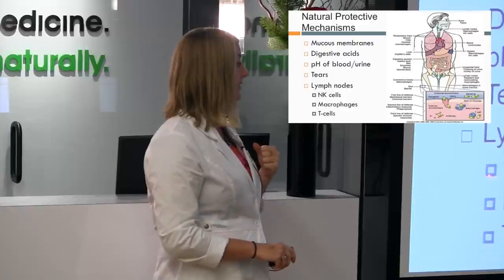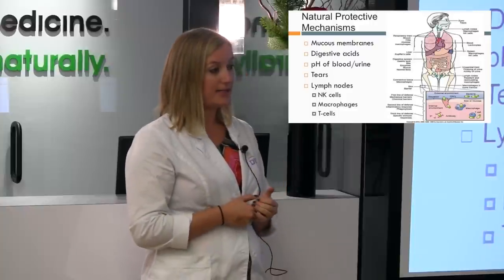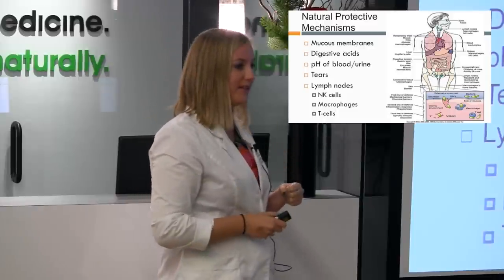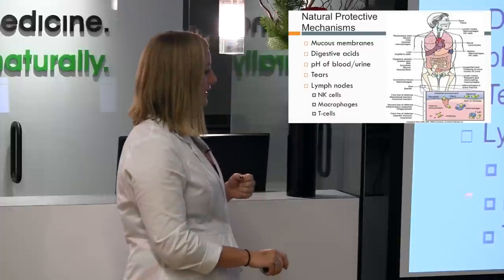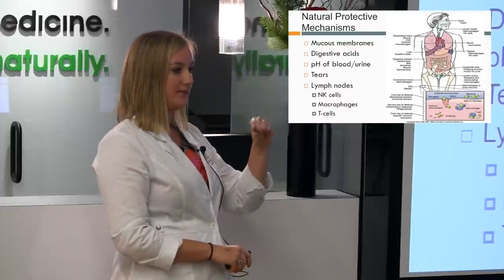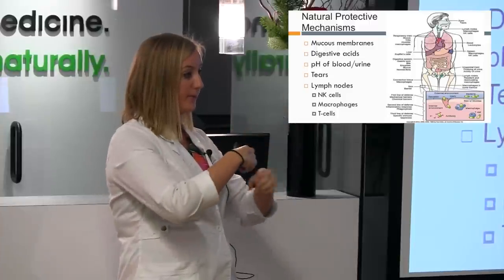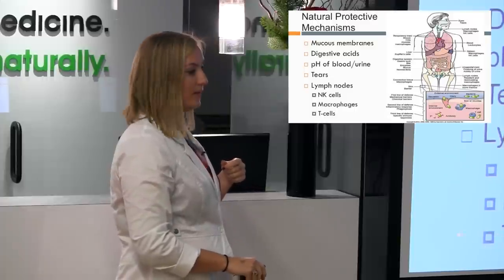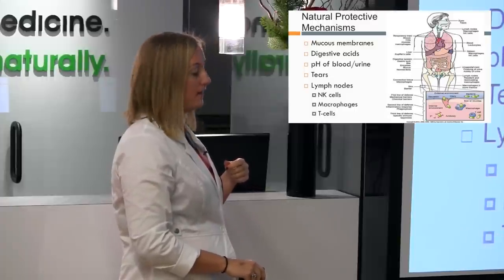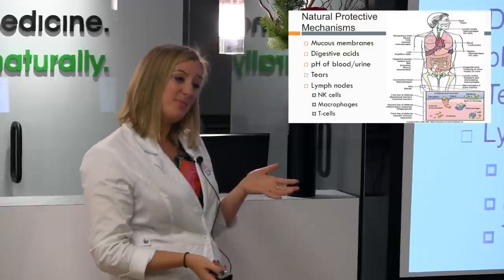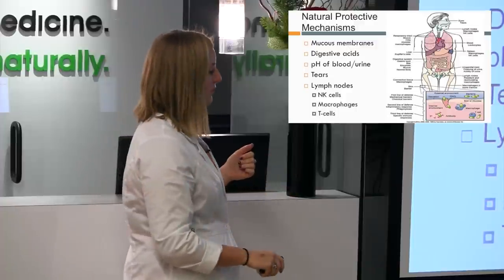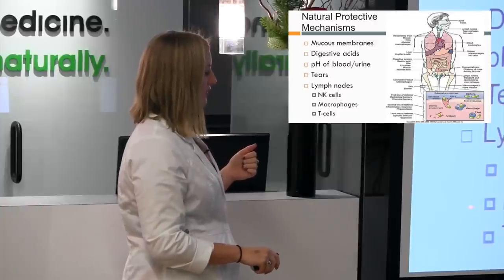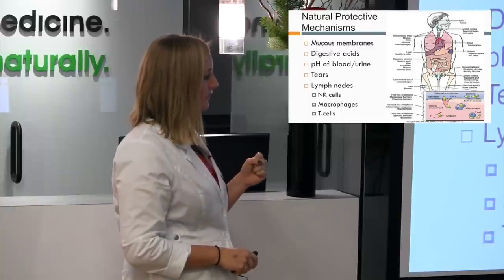We have NK cells — Natural Killer cells. Macrophages are the Pac-Mans — they engulf things, break them apart inside, and put the pieces out through your liver. And then we have T cells; there are a couple different kinds. You may have heard of T cells with specific cancers. Natural killer cells and macrophages both come in a couple of different kinds.